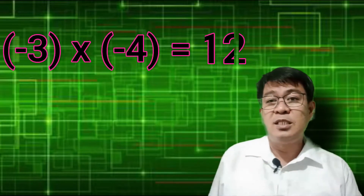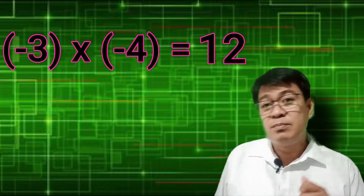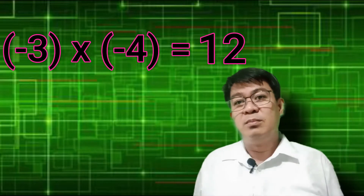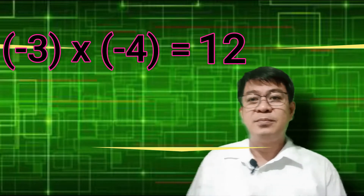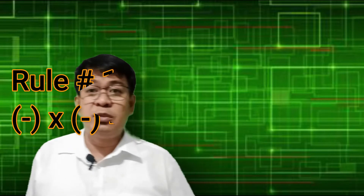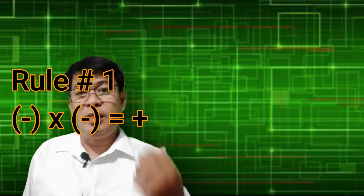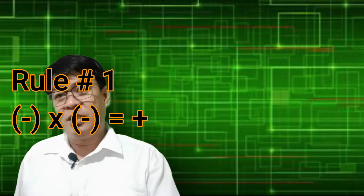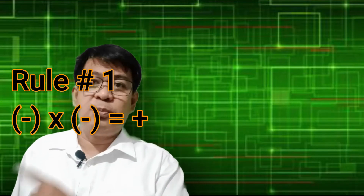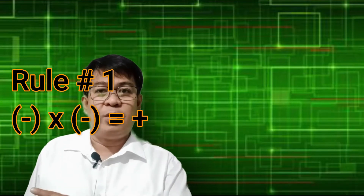Another example: negative 3 times negative 4. The answer is positive 12. So that's the first rule — negative times negative will give you a positive number.